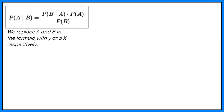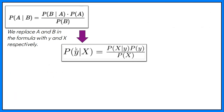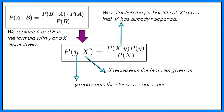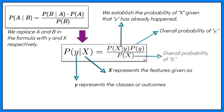For application of the theorem in machine learning, we replace A and B in the formula with Y and X respectively. X represents the features and Y stands for the classes or outcomes. Therefore, we want to compute the probability of Y given that X has been observed. To do this, we establish the probability of X given that Y has already happened or been observed, multiply that by the overall probability of Y, and divide the resultant number by the overall probability of X.